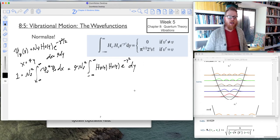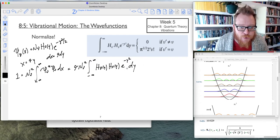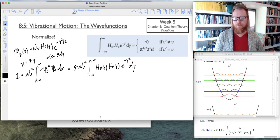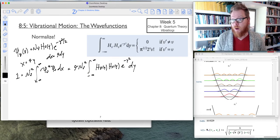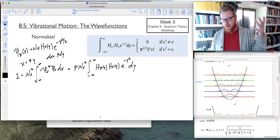And then now check it out. This is pretty cool. We actually have a guide for how to solve this. Look at this, h nu prime times h nu times e to the negative y squared dy equals zero if nu prime and nu are different states, it equals zero, orthogonal wave functions, that makes sense.